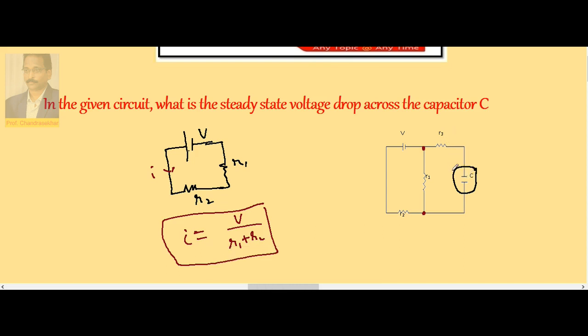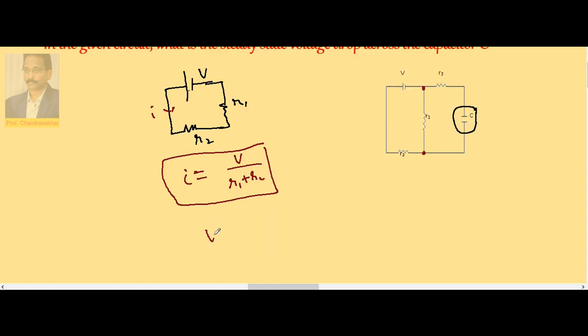The potential difference is always the same, so we can consider V equals I into R1. So V by R1 plus R2, into R1. Because of this potential drop, this is the potential difference across